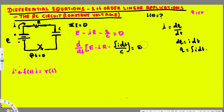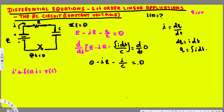So this becomes the integral of I·dt over C, equal to zero. Taking the derivative of both sides: the right side is just zero. On the left side, E is constant so its derivative is zero; I is the only thing changing with time, so we get negative I-prime times R, and the derivative of the integral cancels, giving I over C. So we have negative I-prime·R minus I over C equals zero.